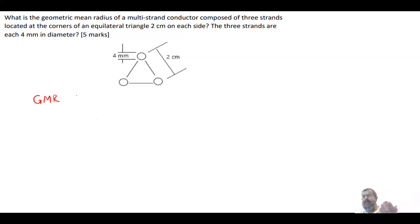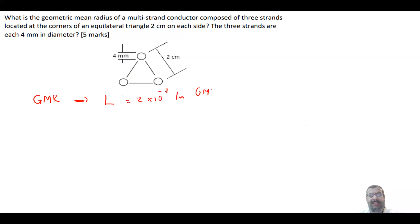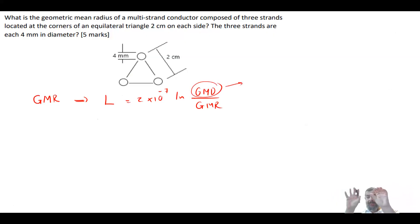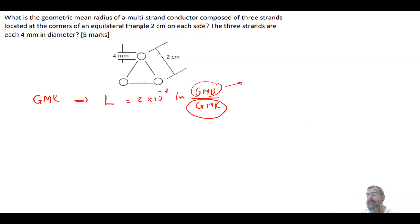GMR is important because the inductance of an overhead line equals 2×10⁻⁷ times ln(GMD/GMR), where GMD is the geometric mean distance — basically the distance between the three phases — and GMR is the distance within the phase itself. This is called a bundle conductor, so it's just one phase, and we need to find its GMR.